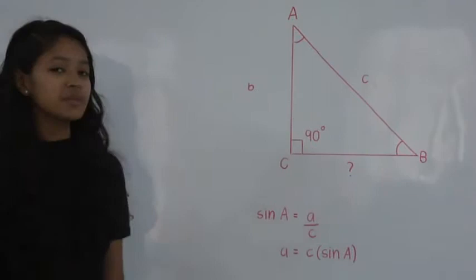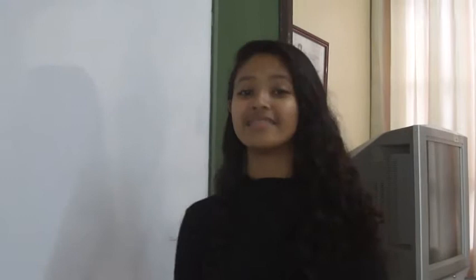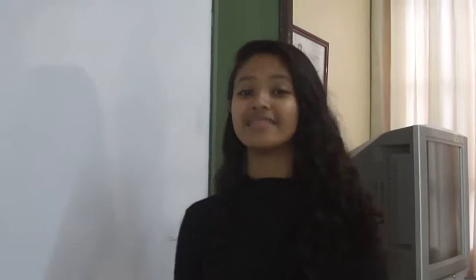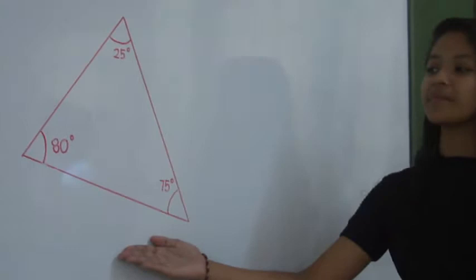But what if the triangle does not contain any right angle? That triangle is called an oblique triangle. This is an example of an oblique triangle because it does not contain a right angle. To solve for the missing parts of an oblique triangle, one must remember the four laws.